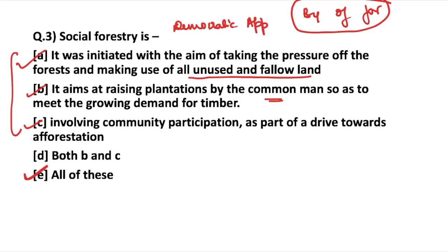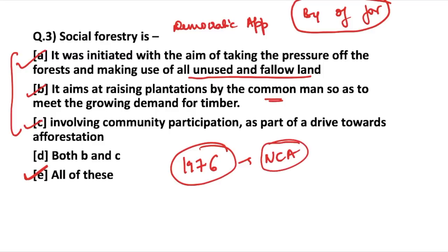The objective of social forestry is to meet the fuel demand, wood demand, fodder demand, and timber requirements — and these demands can be achieved only when we grow more forest. This term was first used in 1976 by the National Commission on Agriculture — remember this.